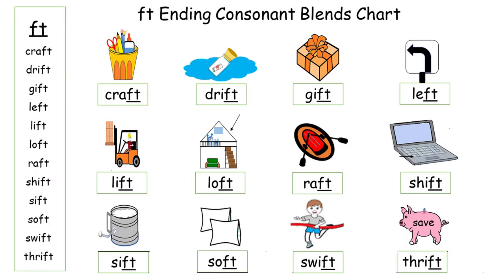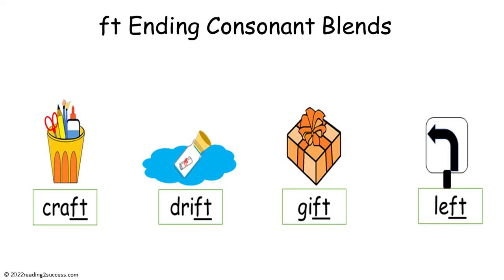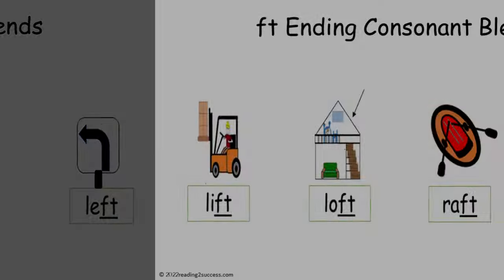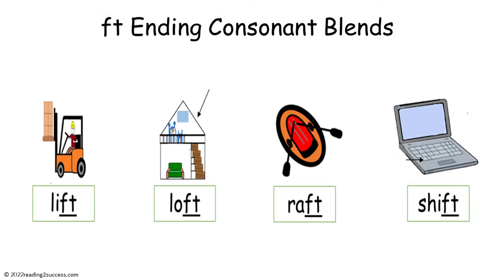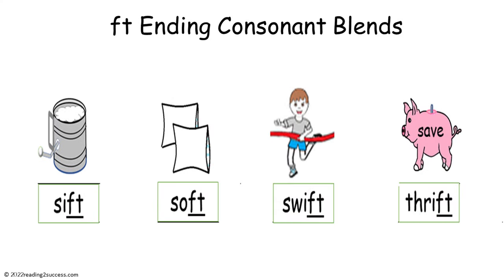Introduce kids to the FT ending consonant blends chart, and then with kids read the words in each row: craft, drift, gift, left, lift, loft, raft, shift, sift, soft, swift, and thrift.